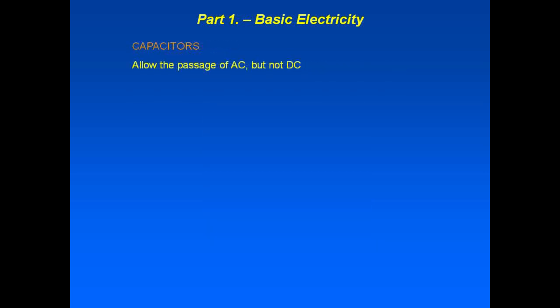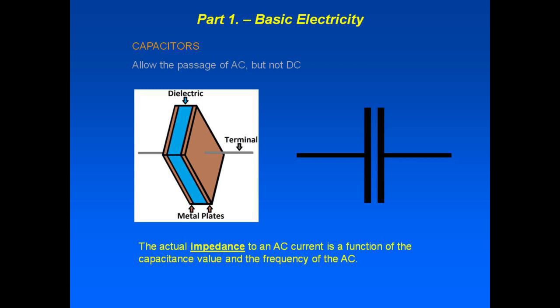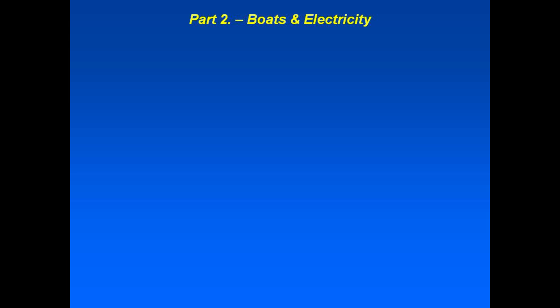A capacitor is a two-terminal device with no direct connection between the terminals. It consists of two conductive plates in close proximity, separated by materials such as Teflon, plastic, or air — referred to as a dielectric. The capacitor blocks the flow of DC current but allows AC to pass with low hindrance. This hindrance is referred to as the capacitor's reactance or impedance, and is a function of the size of the capacitor and the frequency of the AC. Now that we've finished the basic review of electricity, let's look at typical electrical systems found on board boats.